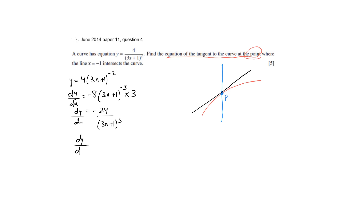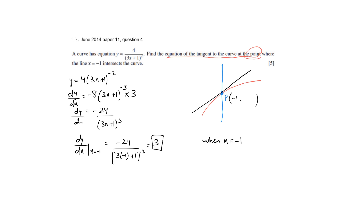The gradient at point P means the x coordinate is negative 1. When you work this out the gradient comes out to be 3. Now when x is negative 1, using the equation of the curve you can figure out the y coordinate, and the y coordinate also comes out to be 1. So the point P has coordinates of negative 1 and 1.